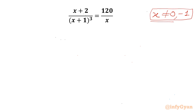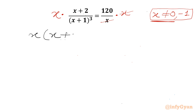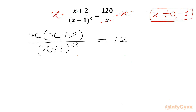Now x is nonzero, so we can multiply both sides by x. The x on the RHS will cancel, so we can write x times (x + 2)/(x + 1) whole cube equal to 120.